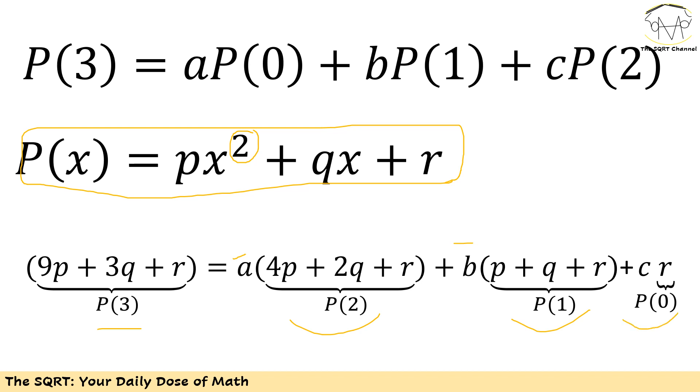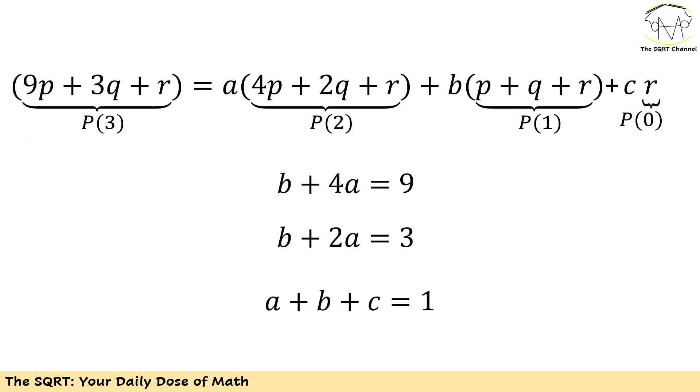In this new equation I have P(3) equals A times P(2) plus B times P(1) plus C times P(0). However, I need to have equal values for the factors multiplied by p, q, and r. On the left hand side I have 9 times p, but on the right hand side I have (4A + B) for the multiplication factor of p.